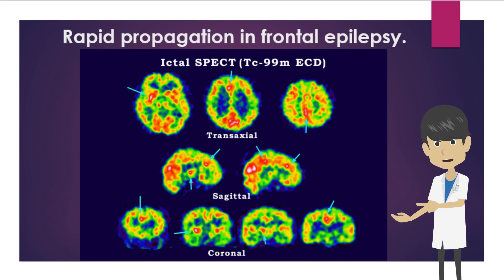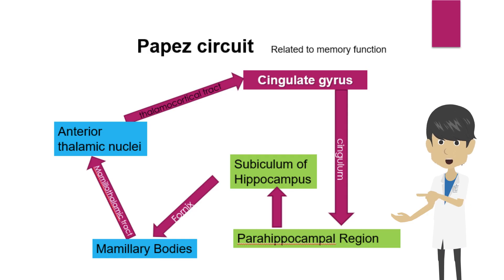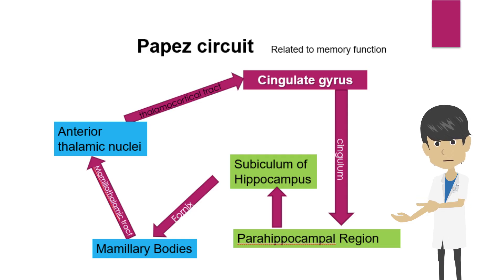The obtained images show many areas of increased perfusion. Reading brain images in temporal lobe epilepsy requires an understanding of neural networks.